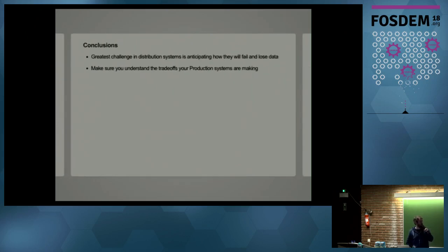So conclusions, I think the greatest challenge in writing distributed systems is anticipating how they will fail and how they lose data. The implementation is already hard in itself, but it's even harder to figure out how they're going to fail. And the other conclusion I took away is make sure you understand the trade-offs that your production systems are making, because they are making trade-offs.